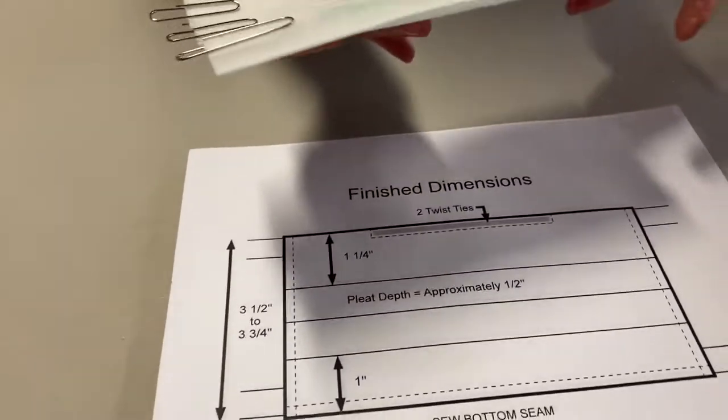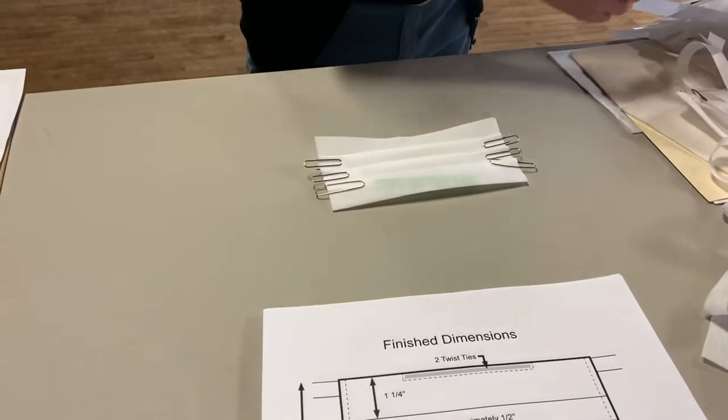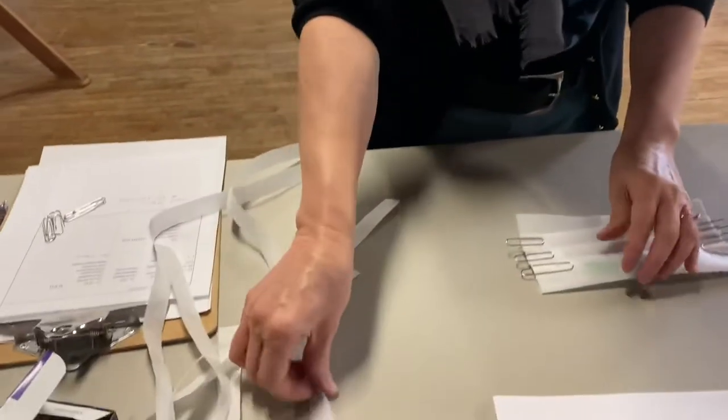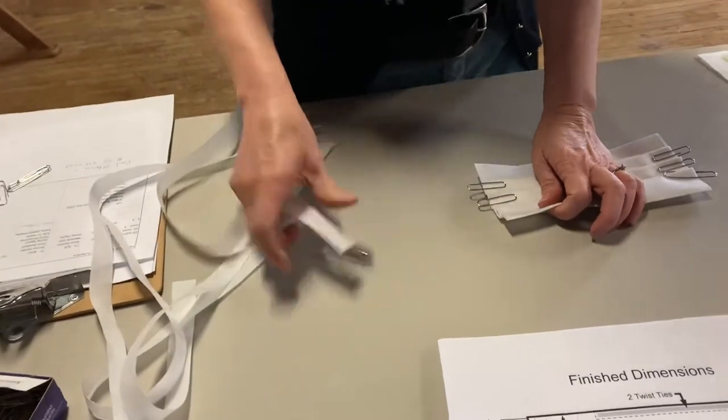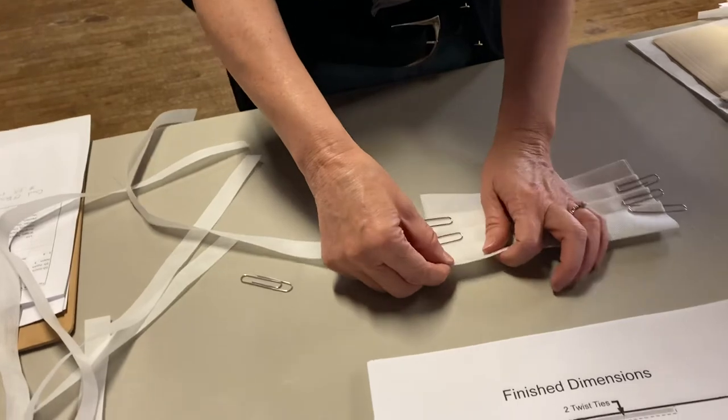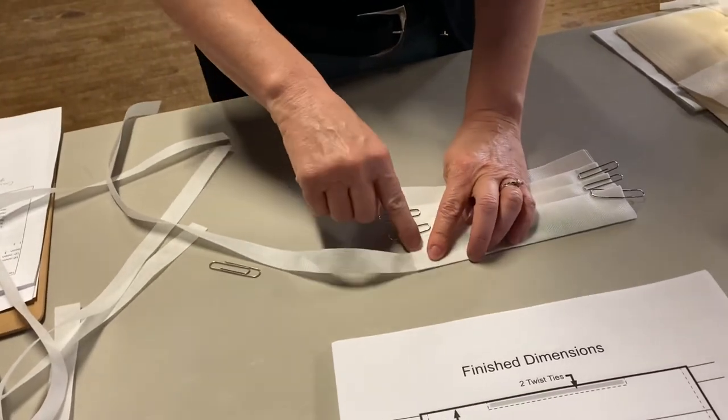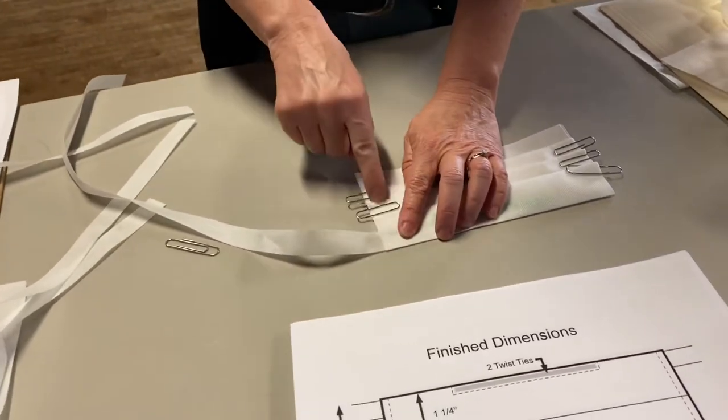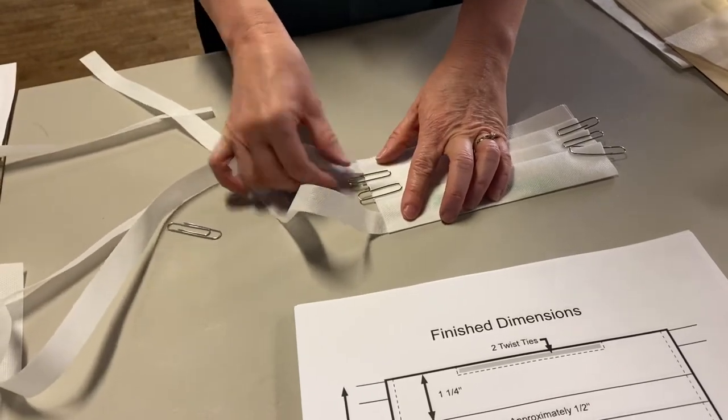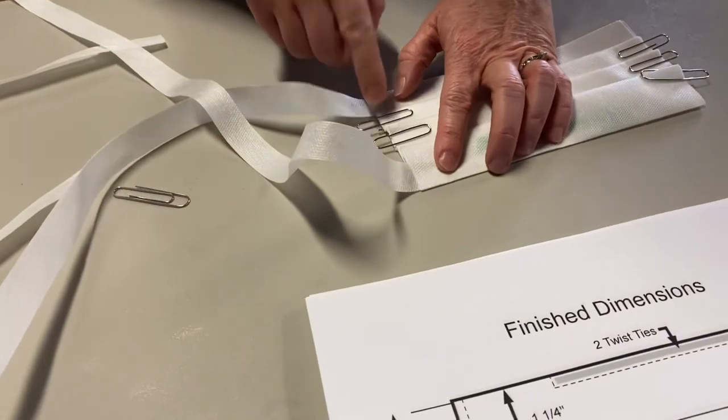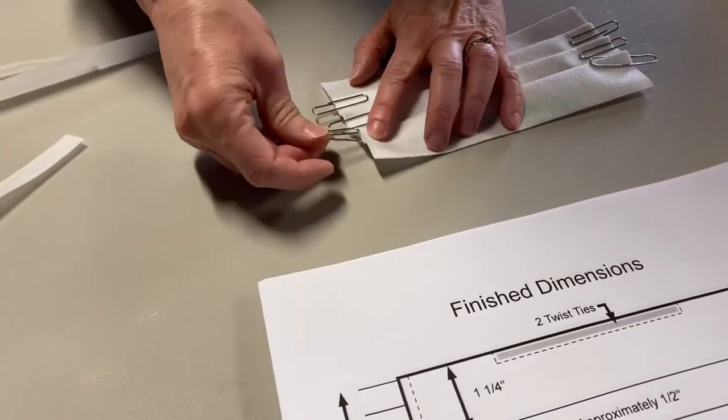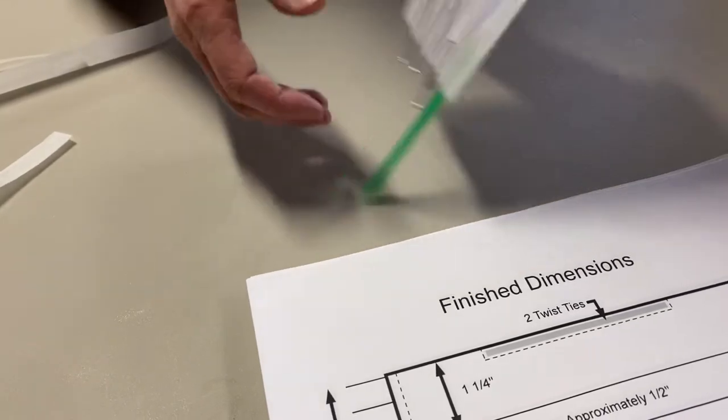From there then I take it to my machine, I have my four ties ready. And then we put the first tie in at about a half an inch. We stitch down and back and then all the way down, lift up the bottom, put the second tie in, down and back to reinforce it. Make sure you remove the paper clips because your sewing needles won't go over them and you'll break one.